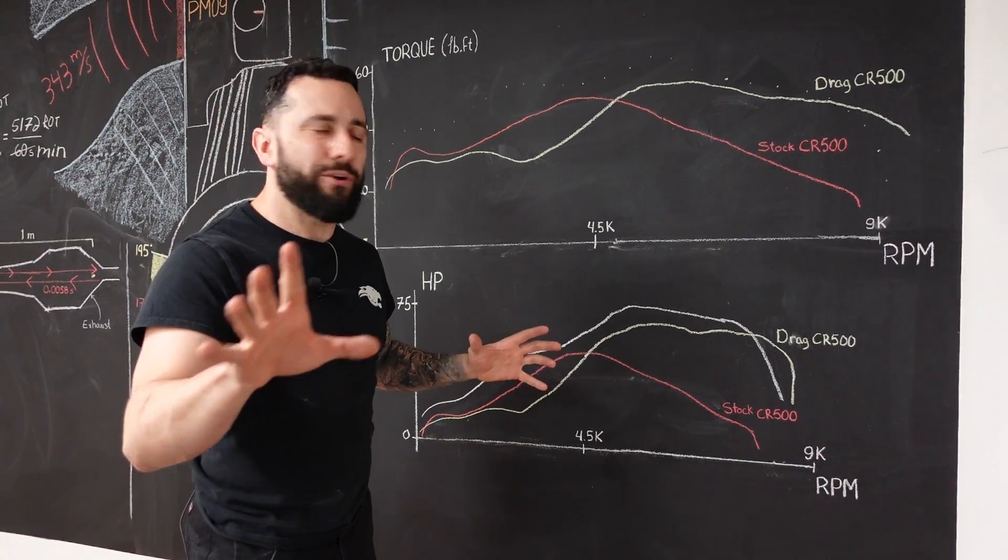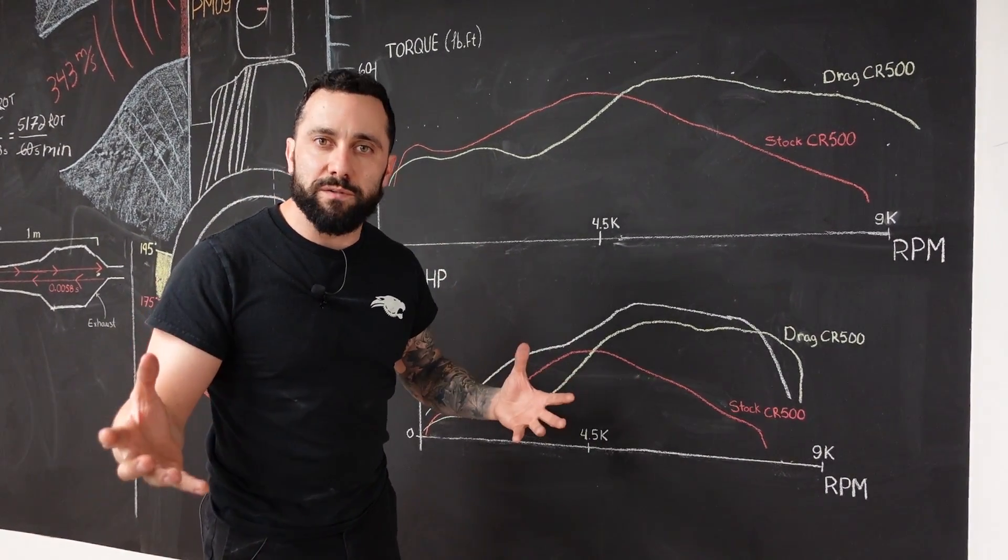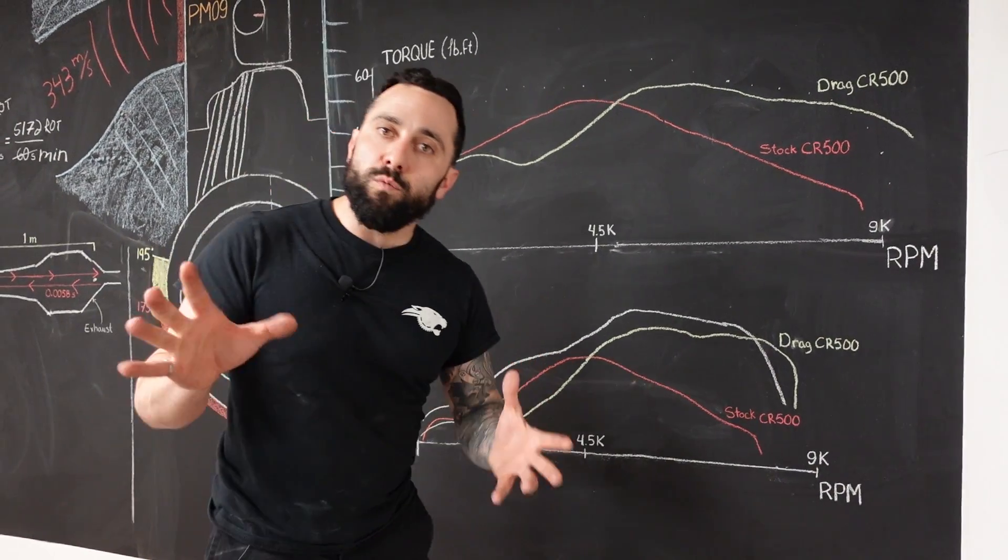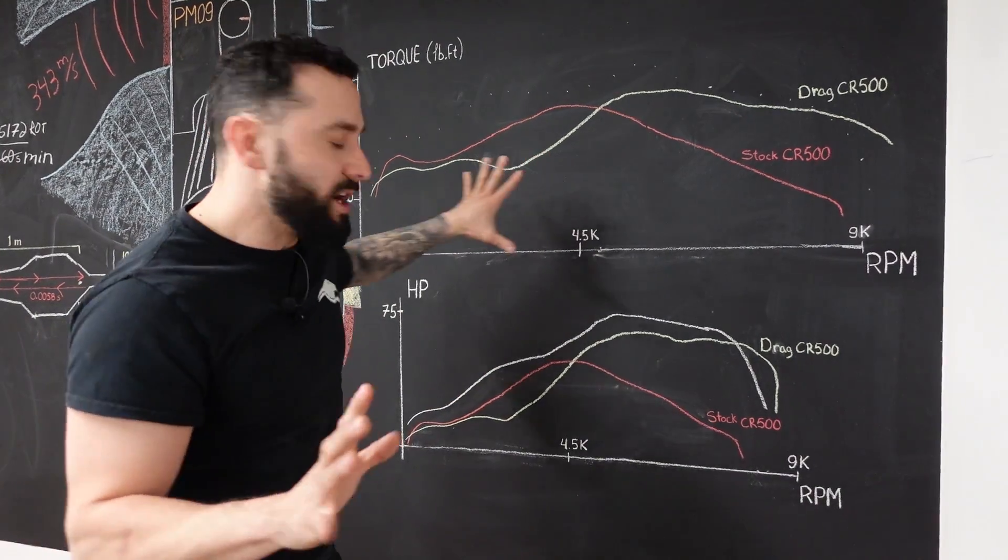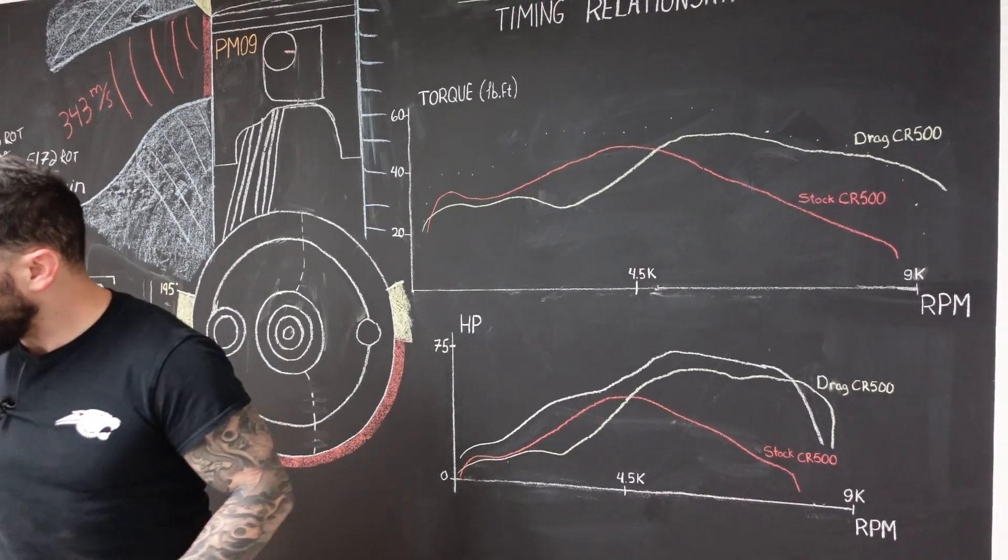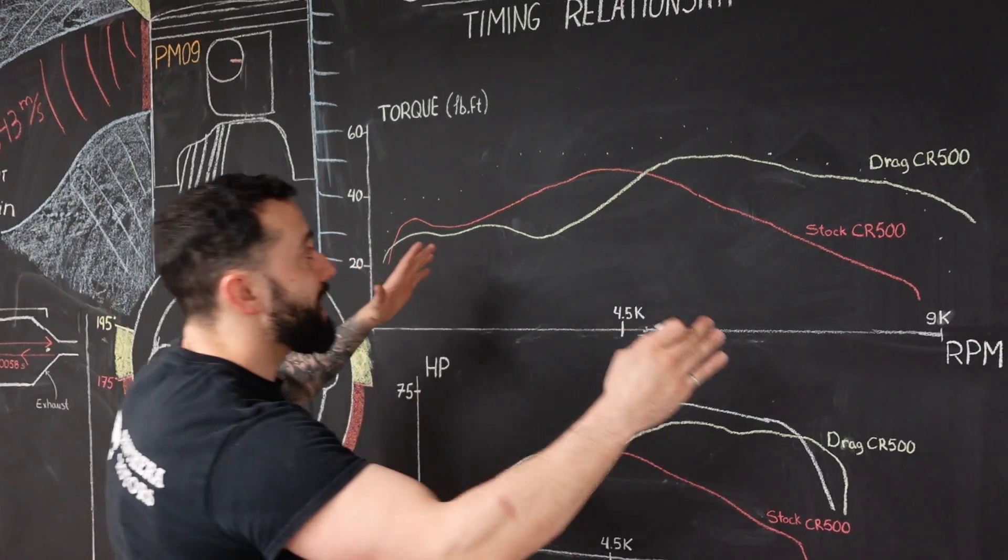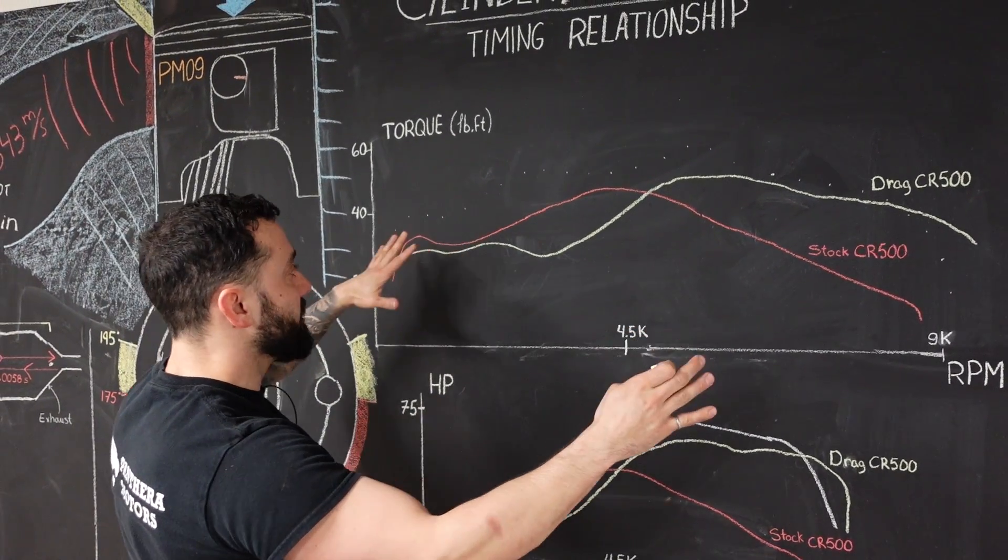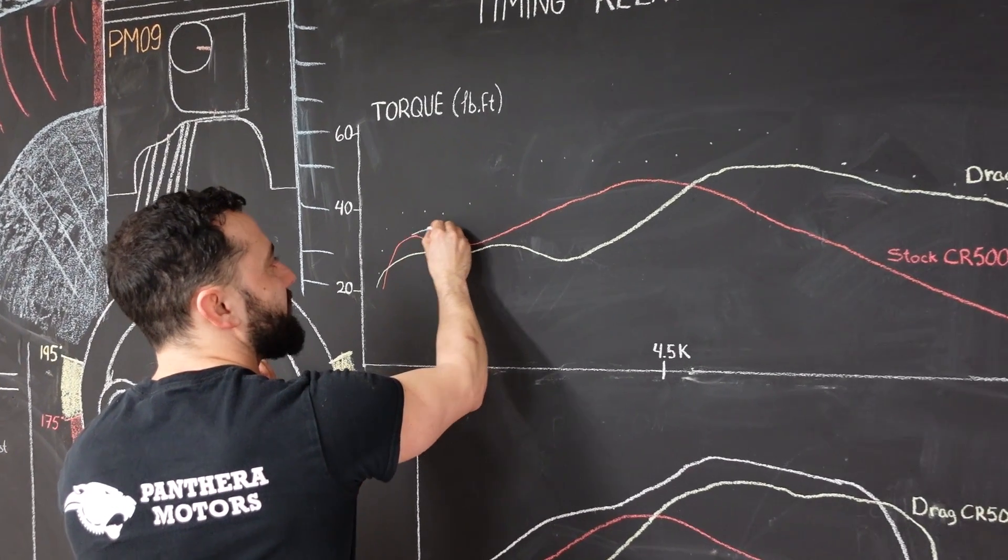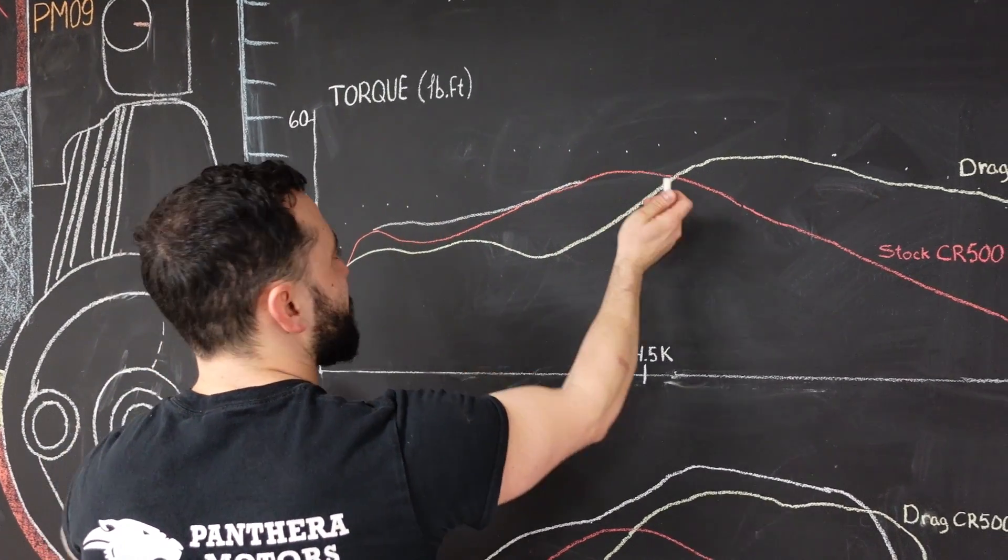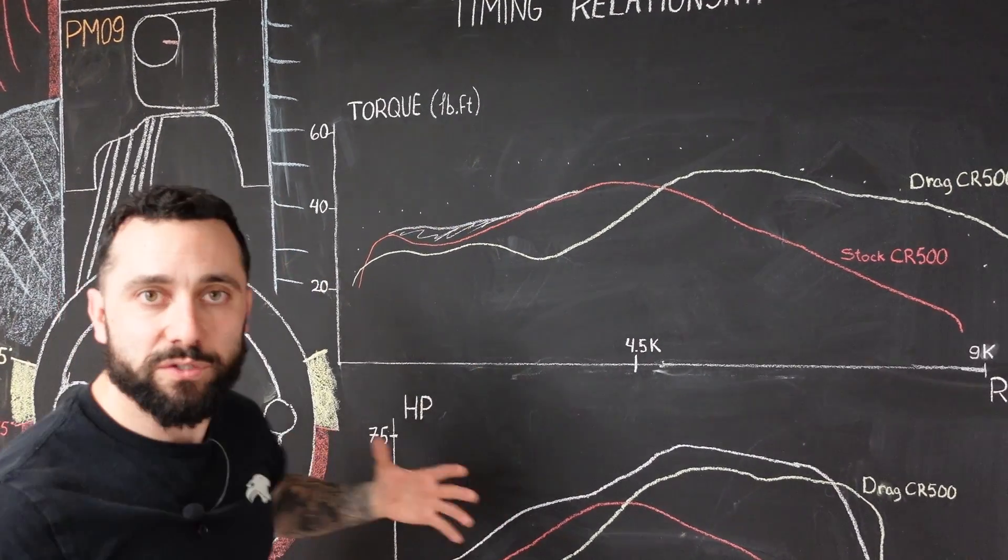Now, I'm sure you've heard before the saying a power valve is not useful on a big bore two-stroke. I understand where that comes from, because if you would take a standard CR500, for example, and add a power valve to that CR500, you wouldn't gain a lot. You would probably gain something like this, and that's about it. And that's why people most of the time will say that a power valve is not useful on a big bore two-stroke.